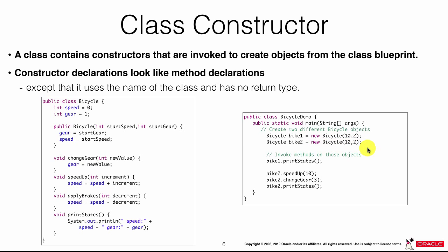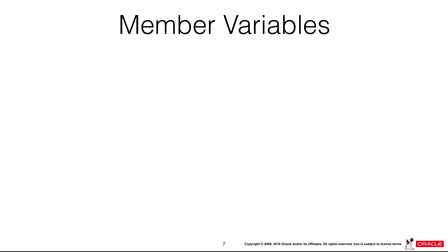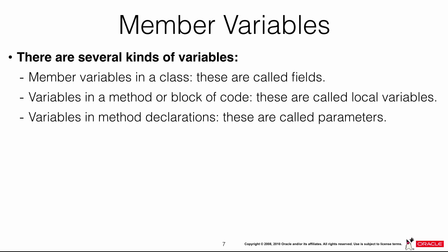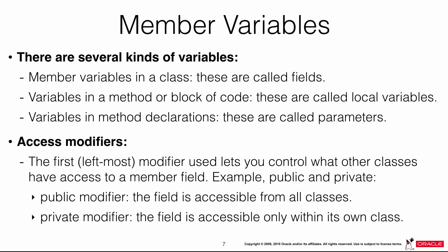There are several kinds of variables: member variables in a class are called fields; variables in a method or block of code are called local variables; and variables in method declarations are called parameters.